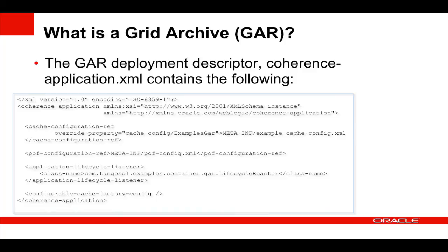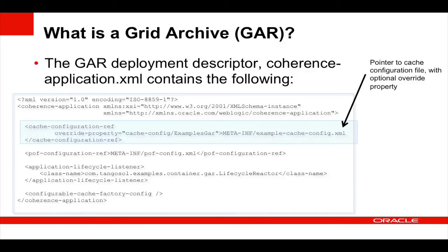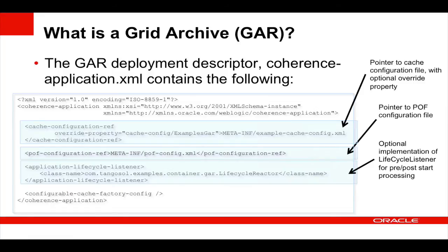The GAR deployment descriptor file contains the following: a pointer to the cache configuration file, with an override property which allows us to override that at the managed server or the WebLogic Server level. We also have a pointer to our POF configuration file. And an optional implementation of a lifecycle listener, which is for pre and post start and stop processing — so we can carry out some processing before or after the services are started on each particular node. And an optional implementation of the configurable cache factory.